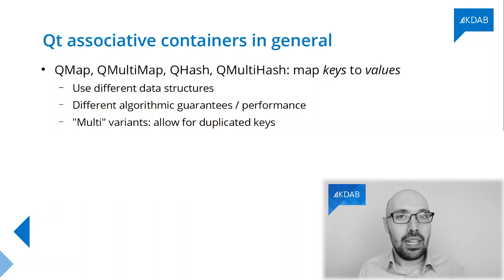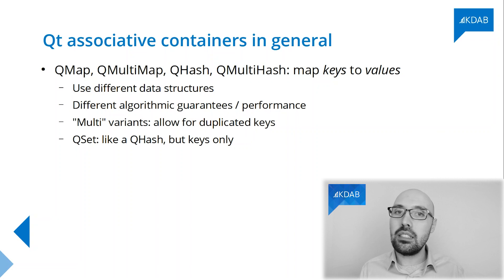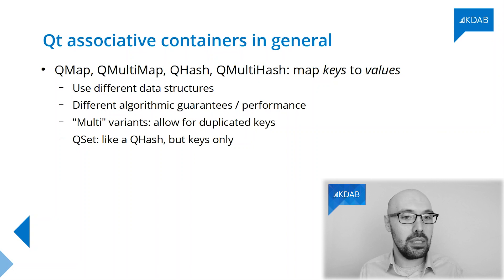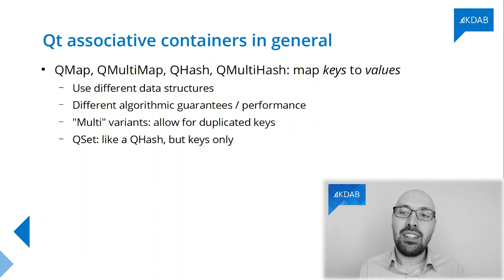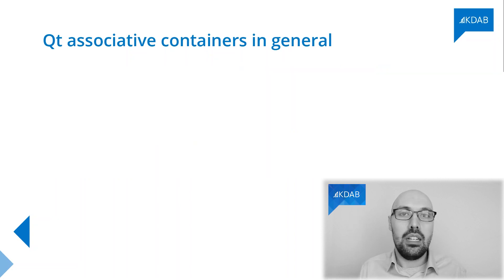There is also QSet. QSet technically is an associative container which behaves like a QHash — it is not ordered unlike std::set from the standard library, but it's a QHash that maps keys to nothing. It's just a container of keys, because that's what a set is.